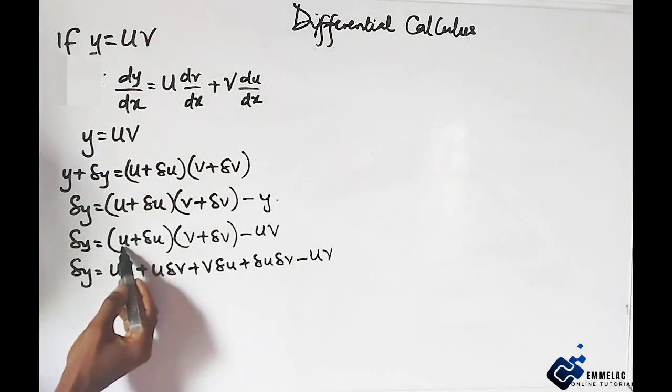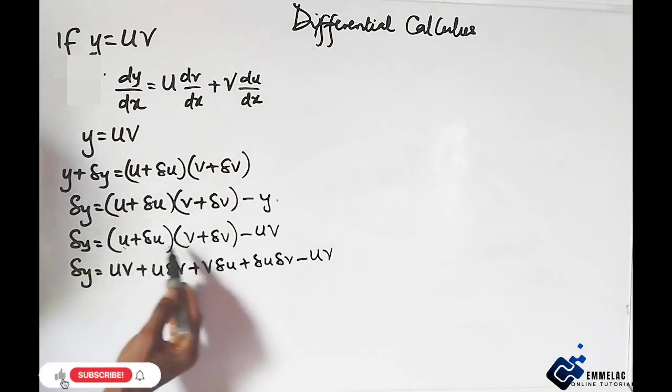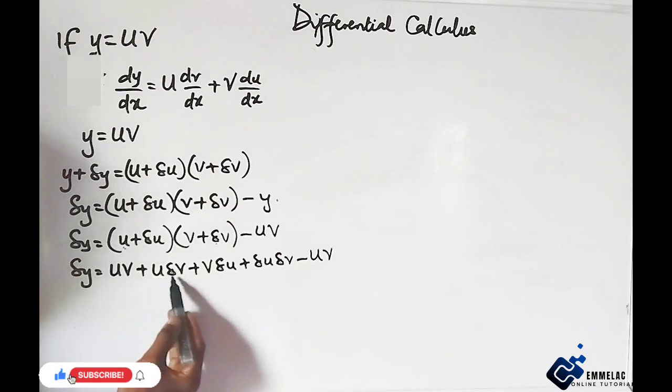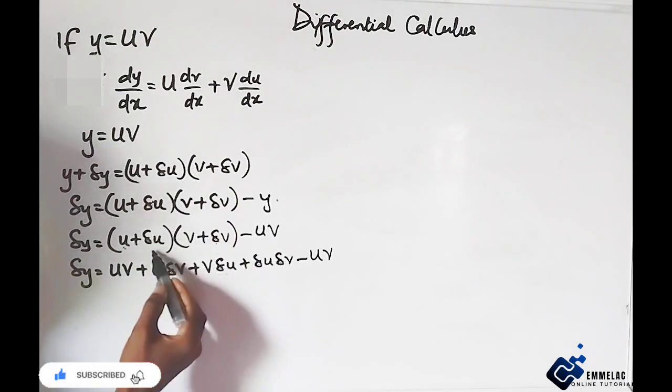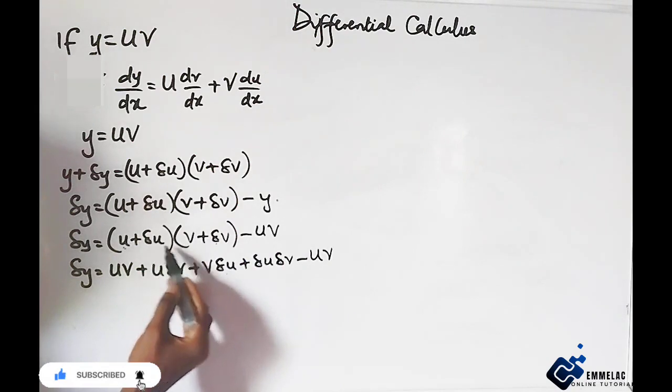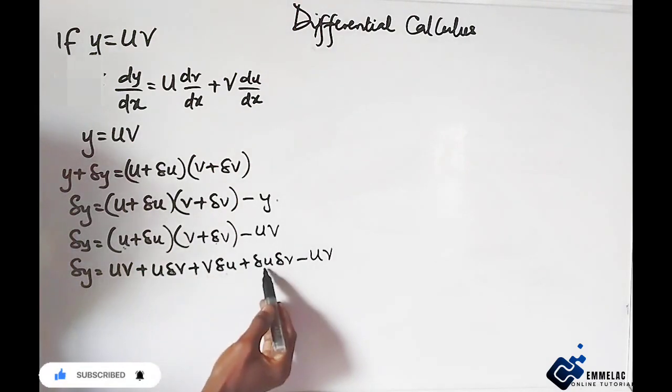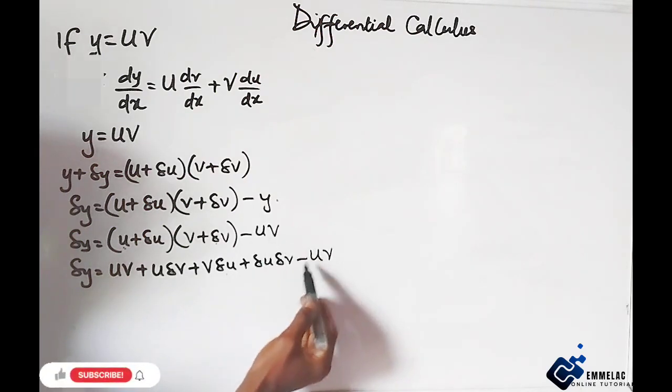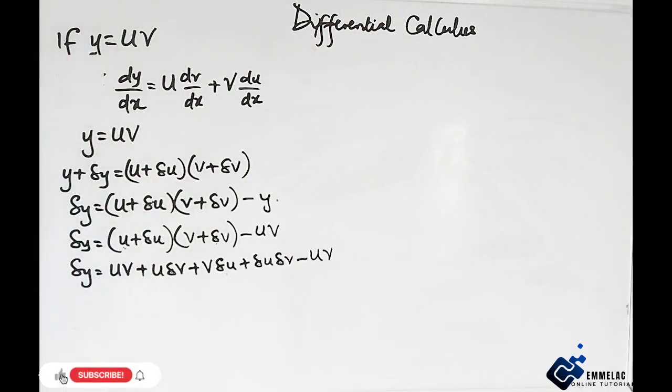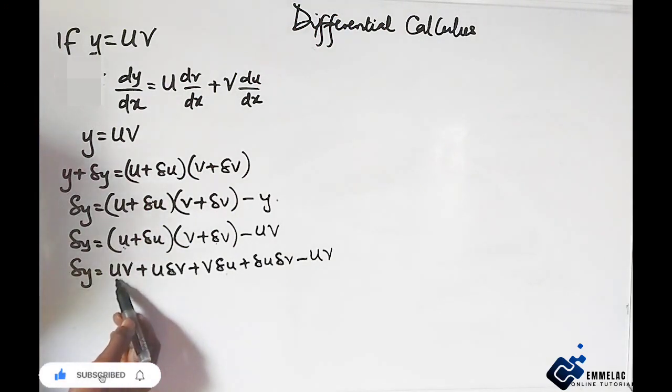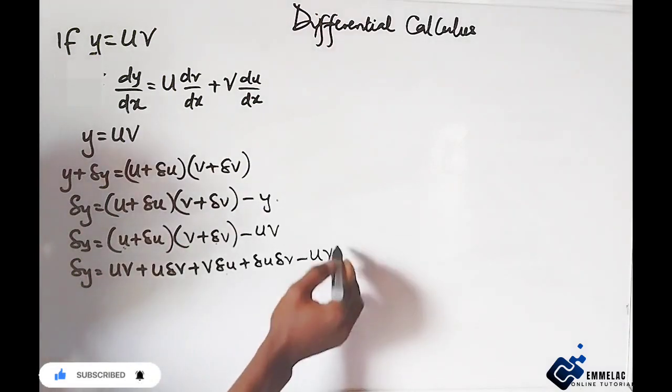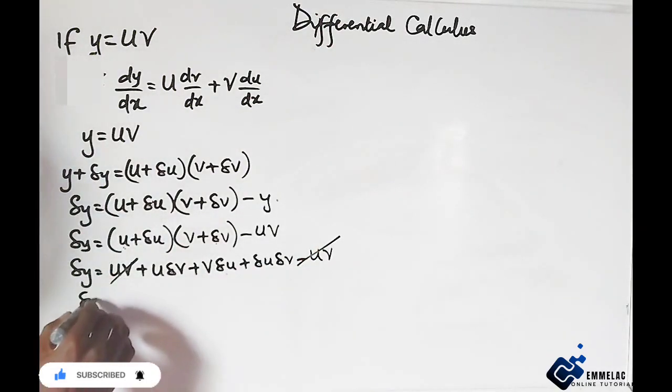Take note that u times v gives us uv, u times change in v gives us u change in v, change in u times v gives us v change in u, and change in u times change in v gives us change in u change in v. Here we have minus uv. If you look at this, you can see we have the same terms, so uv minus uv, we can eliminate. So we are left with change in y equals u change in v plus v change in u plus change in u change in v.